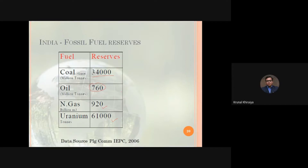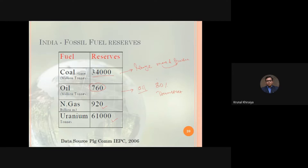Since we have very limited oil reserves, we need to depend on other countries. Oil is a major source of energy primarily because more than 80 percent of it is used in the transport sector. Additionally, in India there are large distances between coal mines and power plants, so significant transportation is required to move coal from mines to power plants.